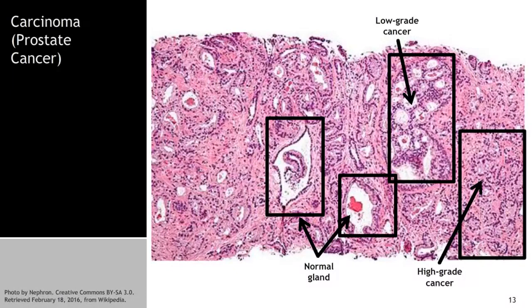Here's a histology slide of prostate cancer, or a carcinoma. Prostate cancer is an adenocarcinoma. In the slide you can see large, normal glands with an epithelial lining. As you develop low-grade cancer, you see that the glands get smaller and bunched up. And then as the cancer gets worse and becomes high-grade, on the right-hand side, you see you lose all the gland architecture and you just have bunched-up cells.